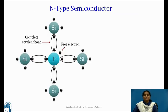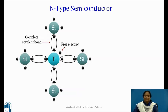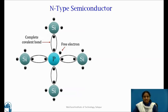Let us now see n-type semiconductor in detail. An n-type semiconductor is produced when a pure semiconductor is doped with a pentavalent impurity such as phosphorus. A phosphorus atom has 5 valence electrons and out of 5 electrons, only 4 participate in bonding with 4 host silicon atoms, while the 5th electron remains loosely bound. As a result, the coulomb force between the phosphorus nucleus and the 5th electron is smaller than it would be in free space.